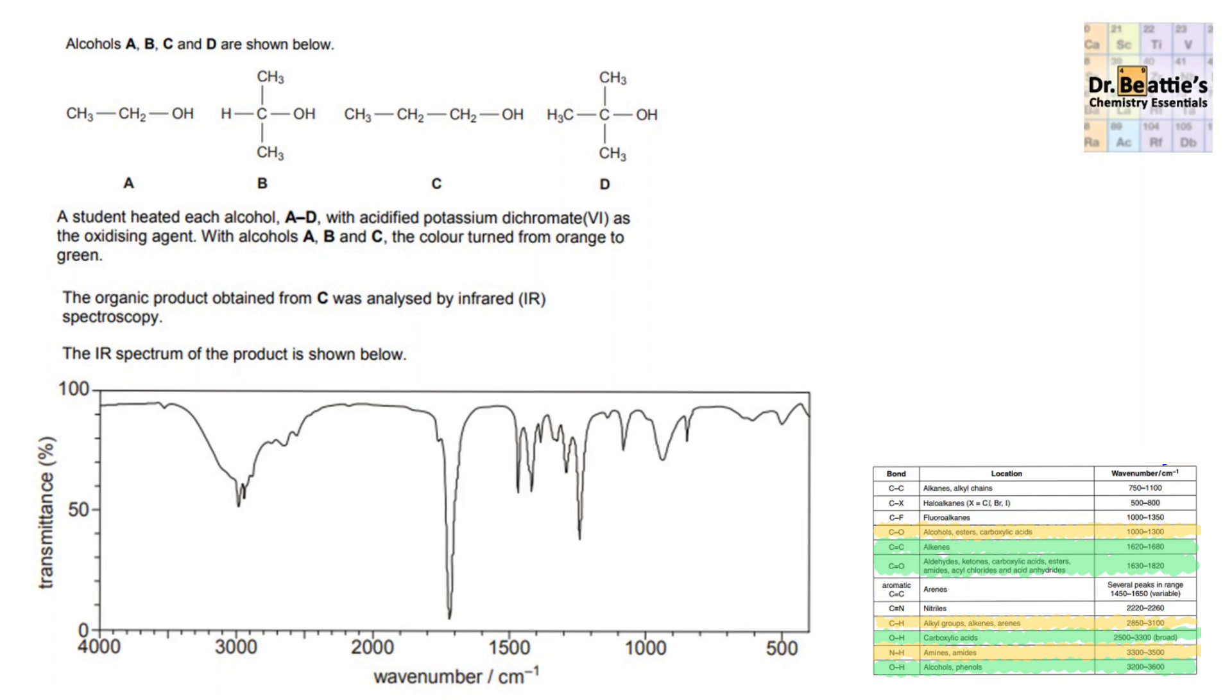Pause the video here and use the datasheet to see if you can work out what the organic product obtained from C was. This is the IR of that product. Hopefully you've noticed that all of these are alcohols: a tertiary, a secondary, and two primary alcohols, all due to the number of carbons on the carbon attached to the OH. From organic chemistry, we know that D cannot be oxidized because it's tertiary, but A, B, and C can be.